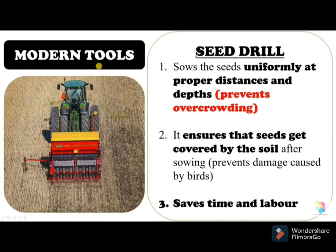The seed drill also ensures that seeds get covered by soil after sowing, protecting them from being eaten by birds. In summary, a seed drill sows seeds uniformly at proper distances and depths, prevents overcrowding, ensures seeds are covered by soil, prevents damage caused by birds, and saves time and labor.